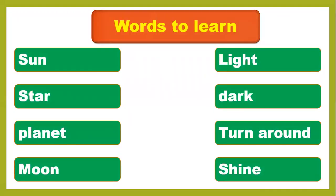There are important words for this lesson. You have to write these on your notebooks and try to learn the meanings. The first ones are: sun, star, planet, moon, light, dark, turn around, and shine.